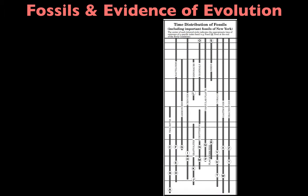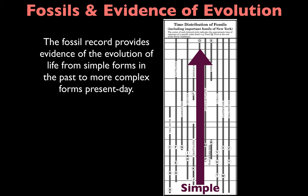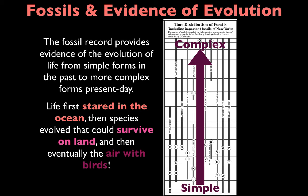The time distribution of fossils can also provide evidence of evolution of life on Earth. The record shows that life has evolved from simple forms in the past to more complex forms in the present. At the bottom of the chart, life was relatively simple. As you move toward present day, life has become more complex — first starting in the ocean, then species evolved to walk on land, and eventually some animals such as birds could fly.